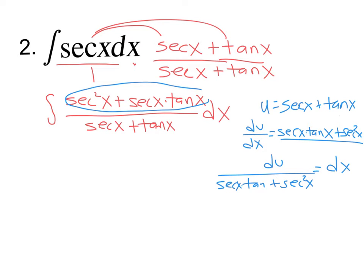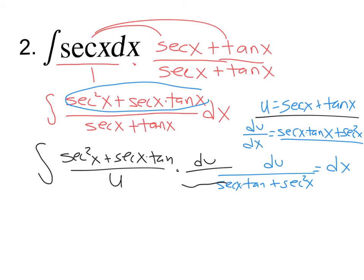So I can make my substitution. Secant squared, secant tan u, right? Replacing the u. And then the du over the stuff. The stuff cancels because this is such a disaster problem. One over u du. So now finish it. That's the ln of u.